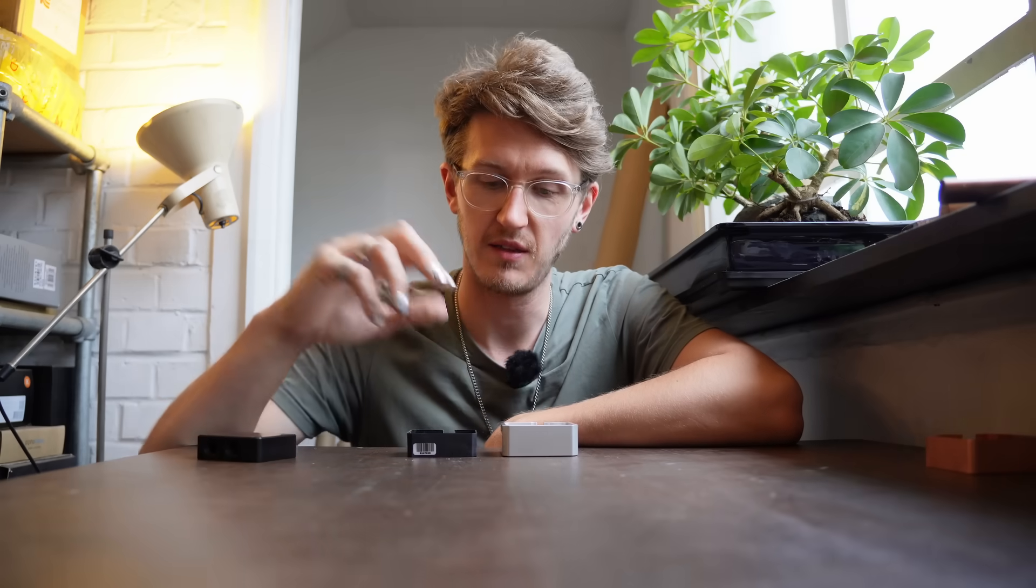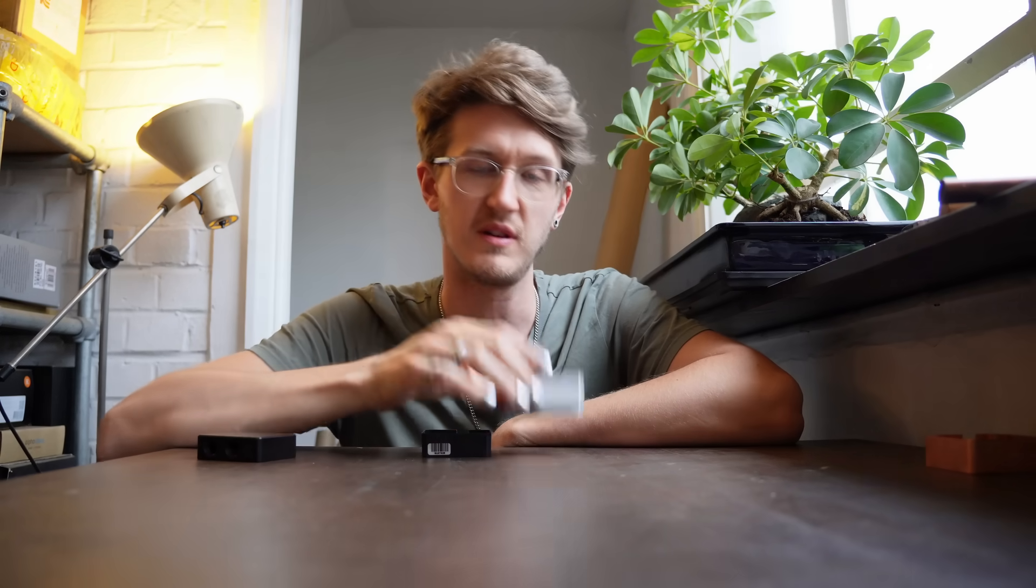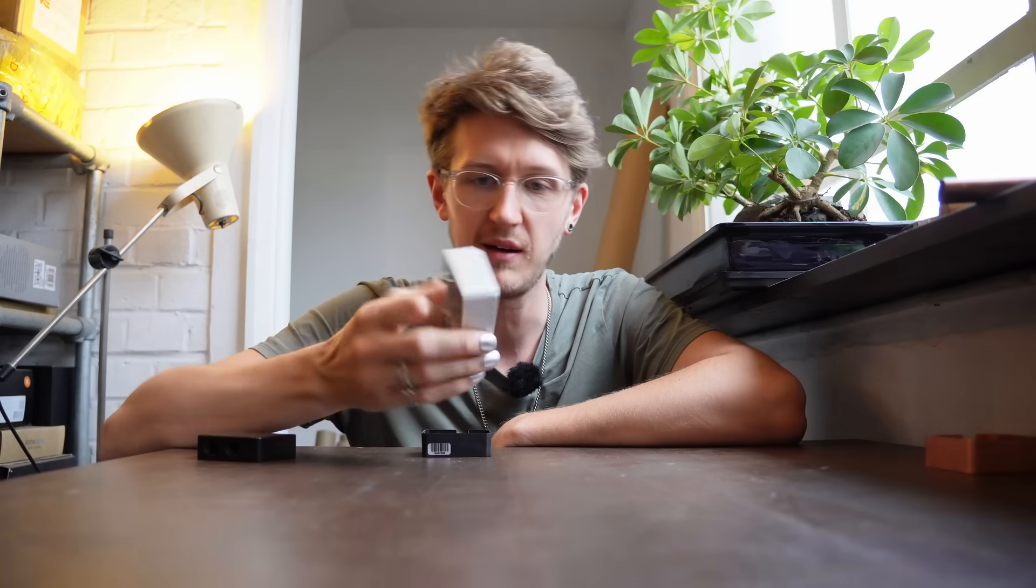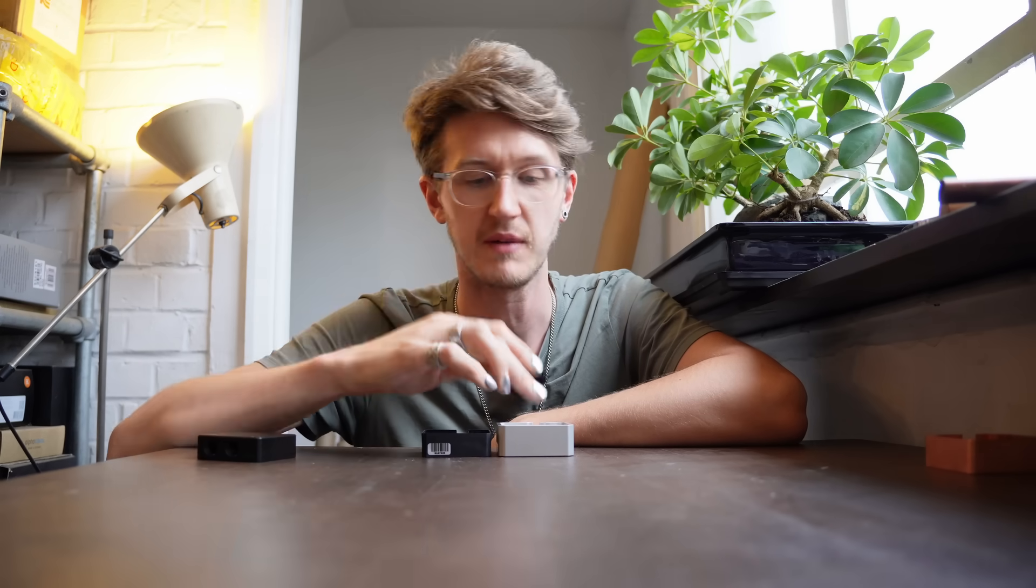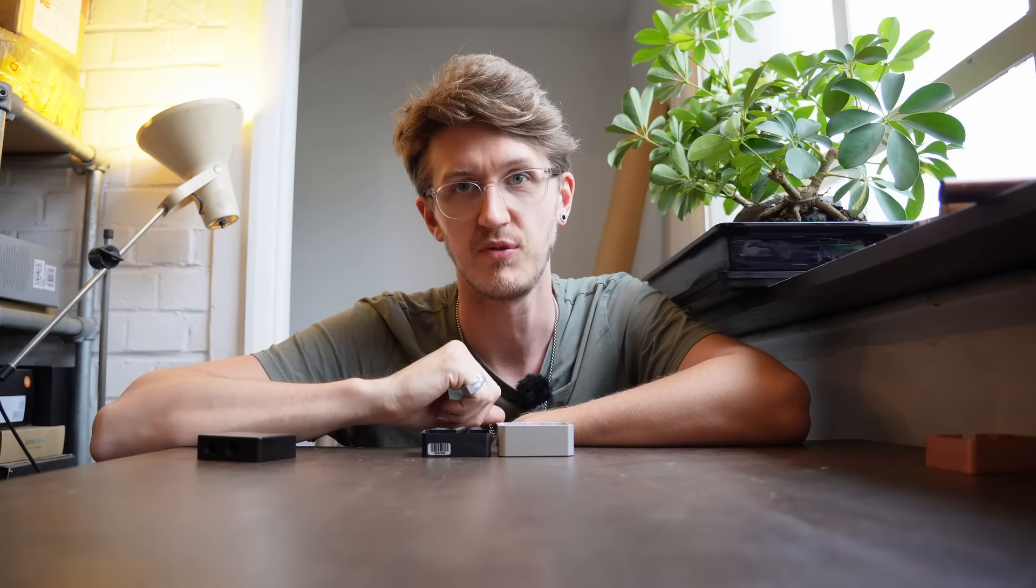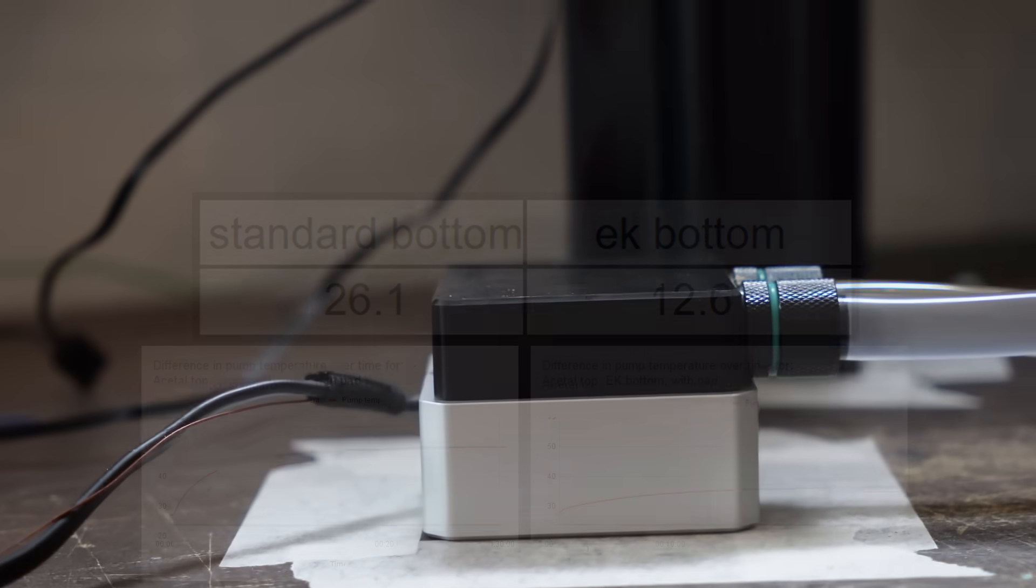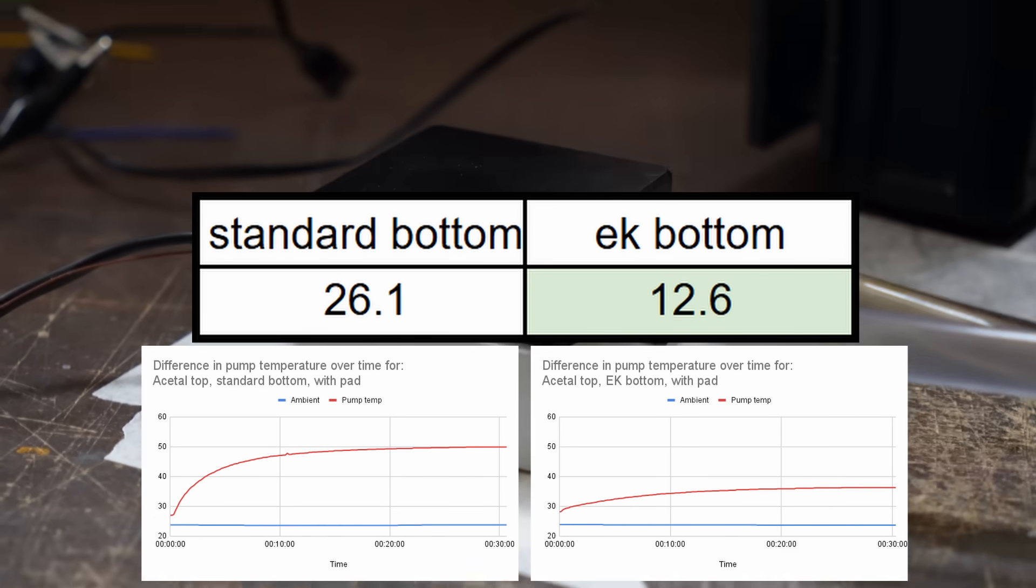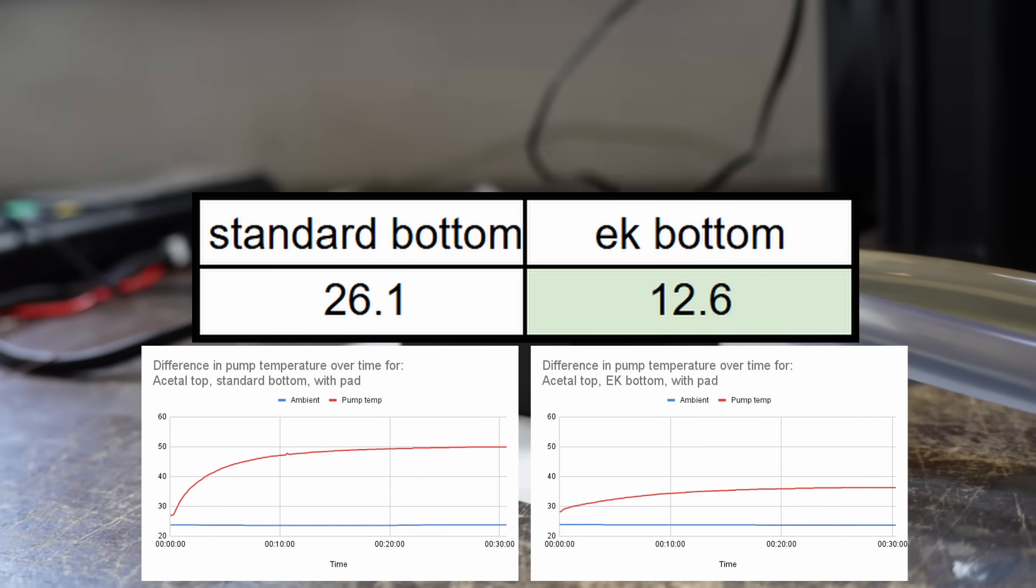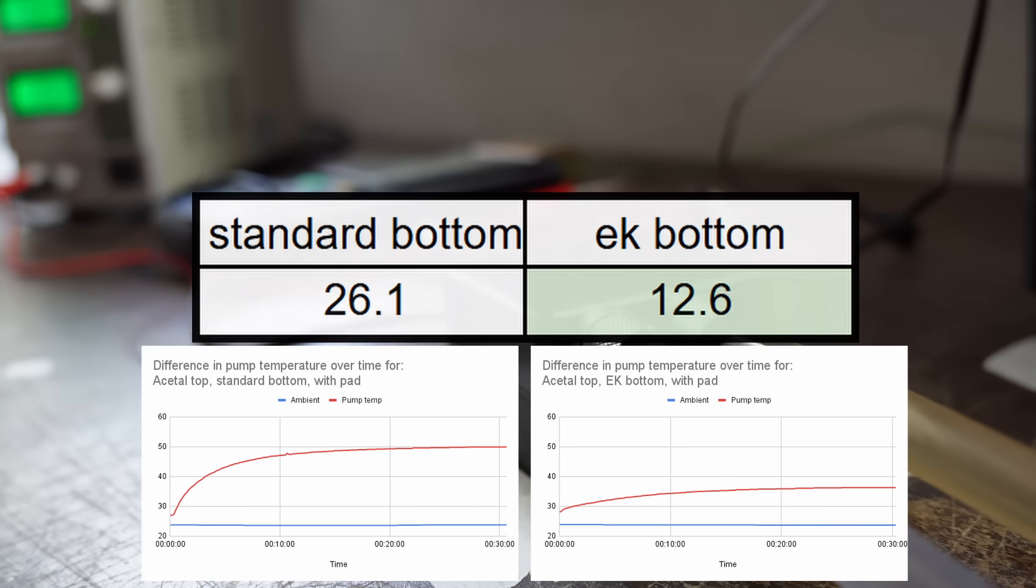So next up we're going to be testing the bases. We have the original plastic base that came with the pump and we're going to be comparing that with this aftermarket EK aluminum base. It's a lot bigger, it's got a lot more thermal mass, and we're going to be running both with a thermal pad and see how they perform. As expected, the giant lump of aluminum absolutely wipes the floor with the flimsy piece of plastic. The 13 and a half degree improvement is quite a decisive win for the EK pump bottom.